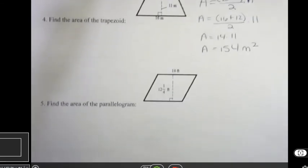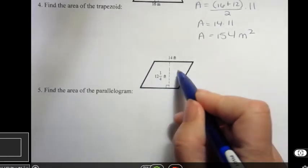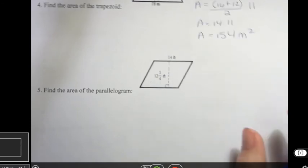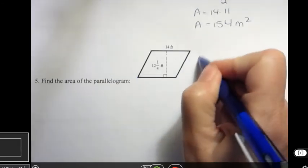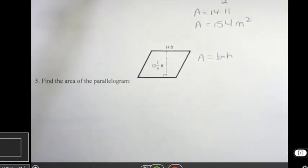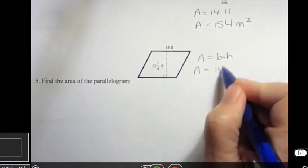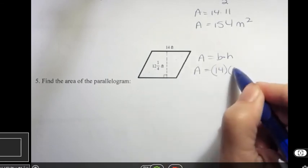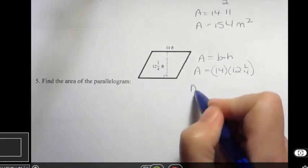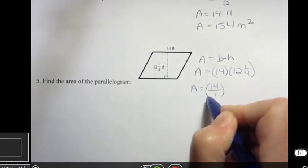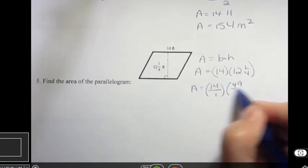And finally, the last one is a parallelogram. And a parallelogram, like I said, it's twice as much as a triangle, right? If you cut that in half, you'd see you get a triangle on each side. So the formula for an area of a parallelogram is just base times height. And so I know my base is 14. And I know my height is 12 and a quarter. Well, I'm going to change that into an improper fraction to work this problem. And to say this is 14 over 1. And this is 12 times 4 is 48 plus 1 is 49 over 4.